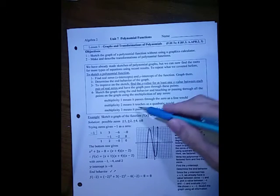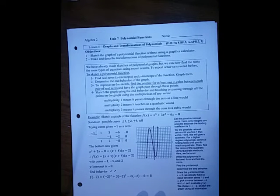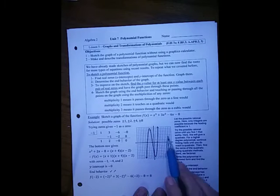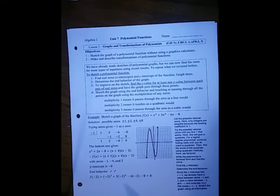Multiplicity 3 means it would pass through as a cubic. 4th will also touch like a quartic, which is similar to a quadratic. So any even one will just touch and go back in the same direction. But 4th degree and 6th degree will be flatter than a quadratic.